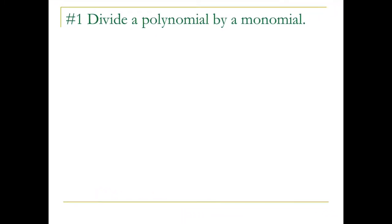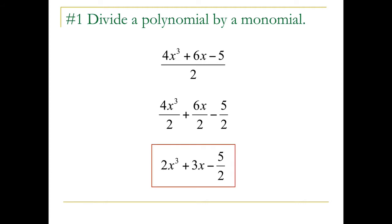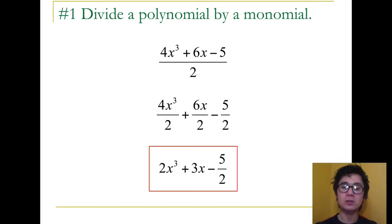Let's divide a polynomial by a monomial. Let's say we have 4x cubed plus 6x minus 5 divided by 2. Dividing this polynomial is really simple. We just have to separate each term and we'll have 4x cubed divided by 2, plus 6x over 2, minus 5 over 2. And by simplifying the fraction, we have 2x cubed plus 3x minus 5 over 2.